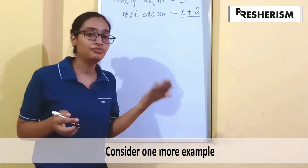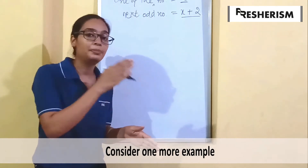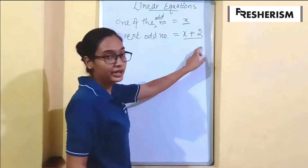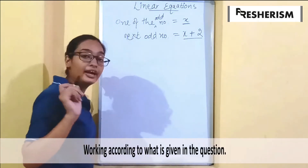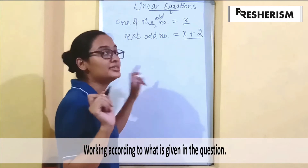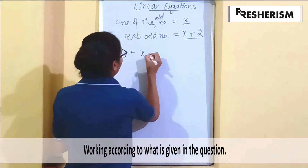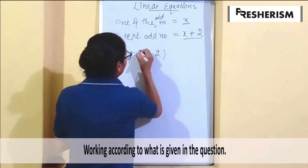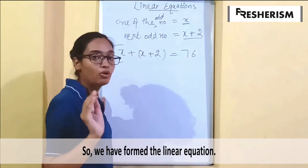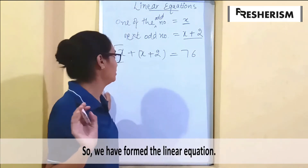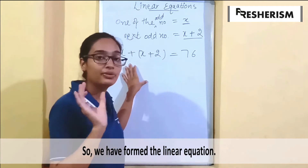One more example: if three is an odd number, then the next consecutive odd number would be three plus two, that is five. These are two consecutive odd numbers. We have assumed that their sum is 76, so the sum is equal to 76.